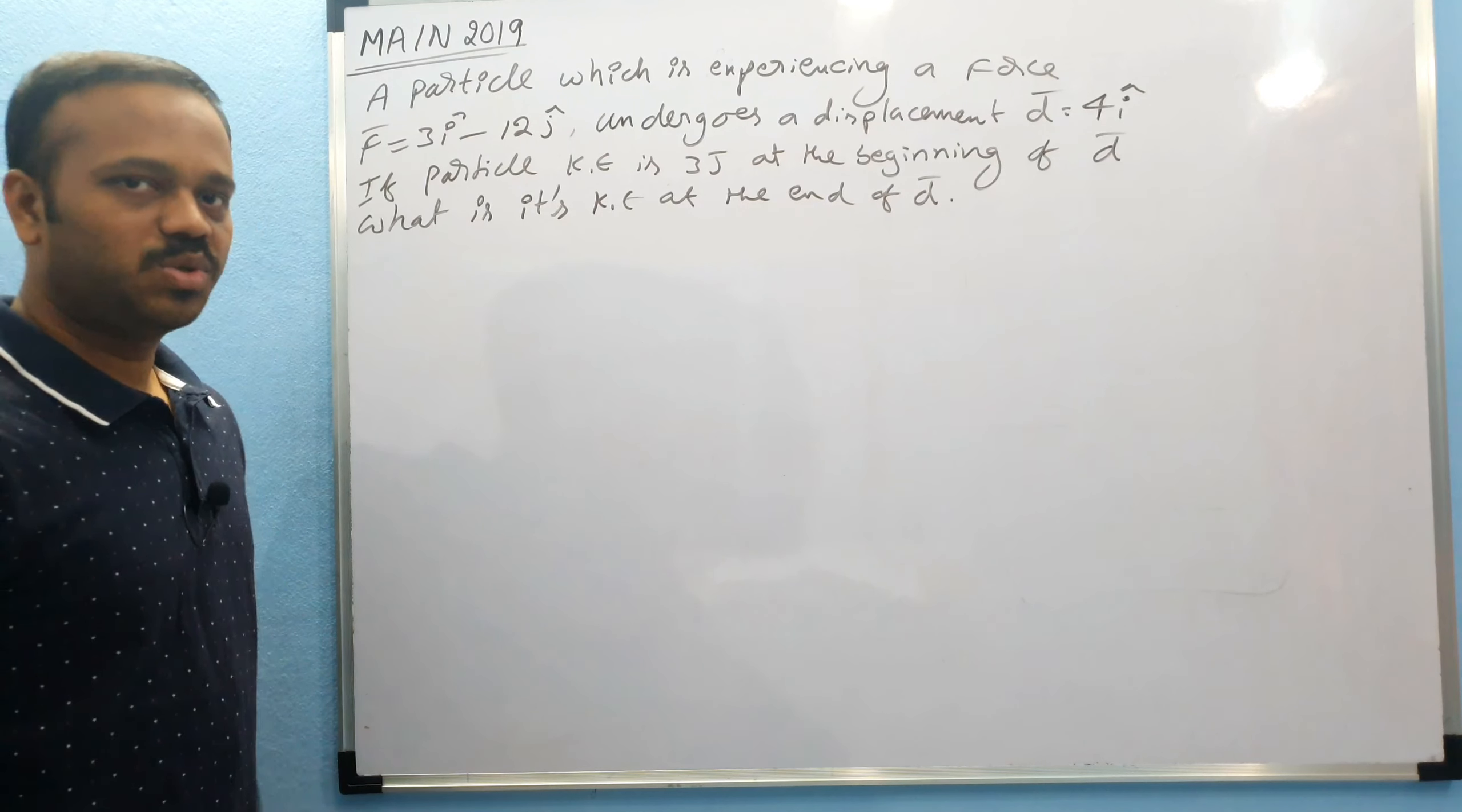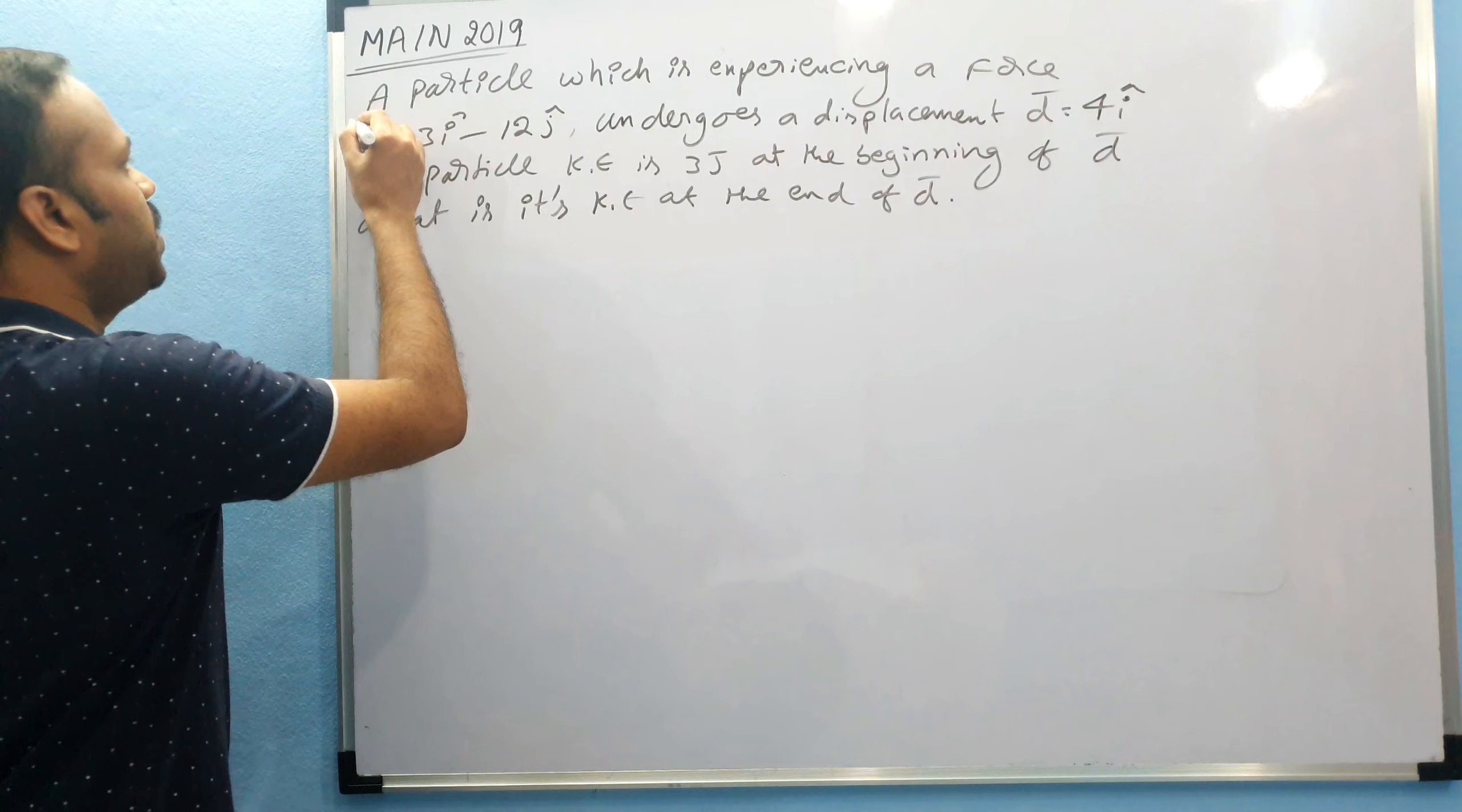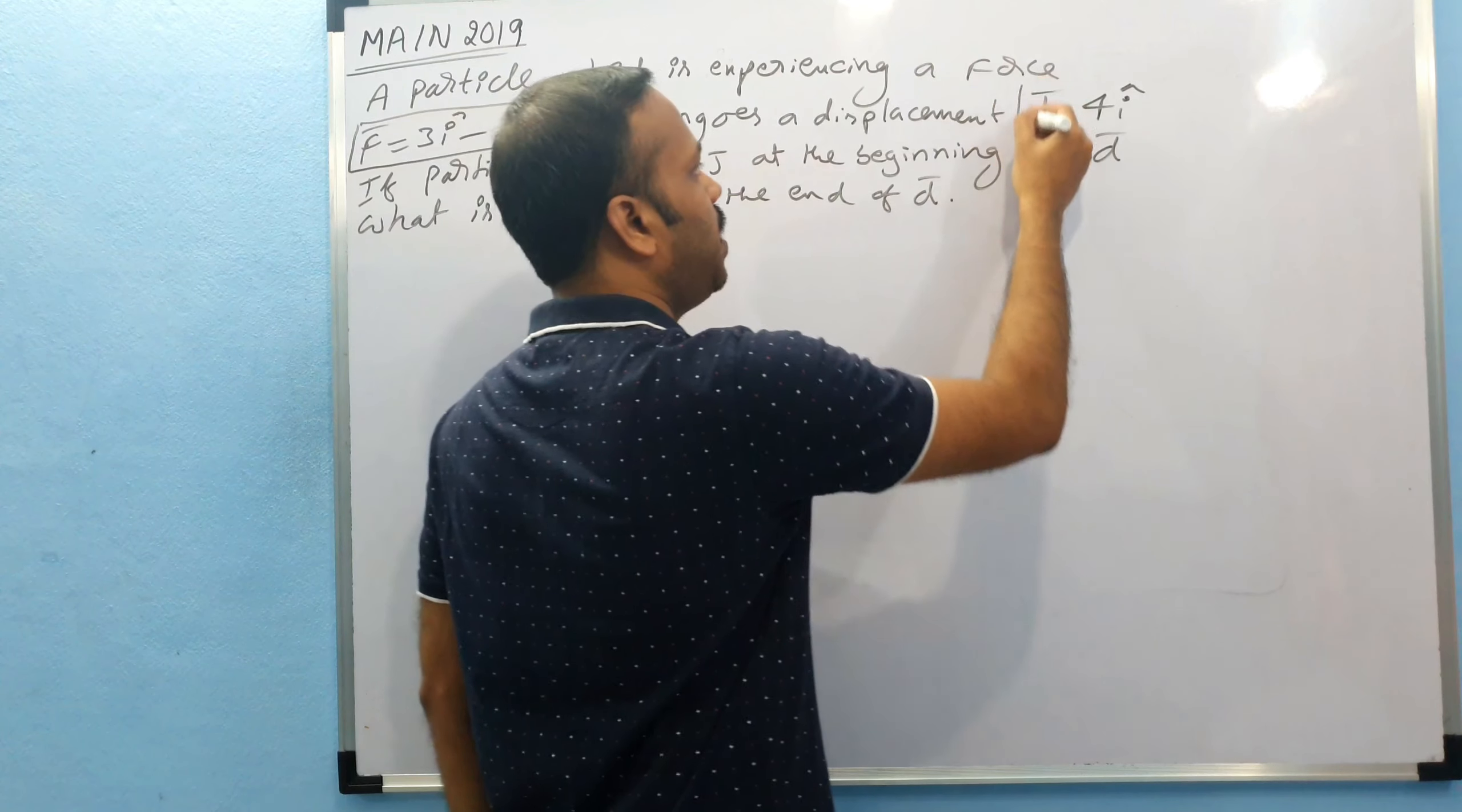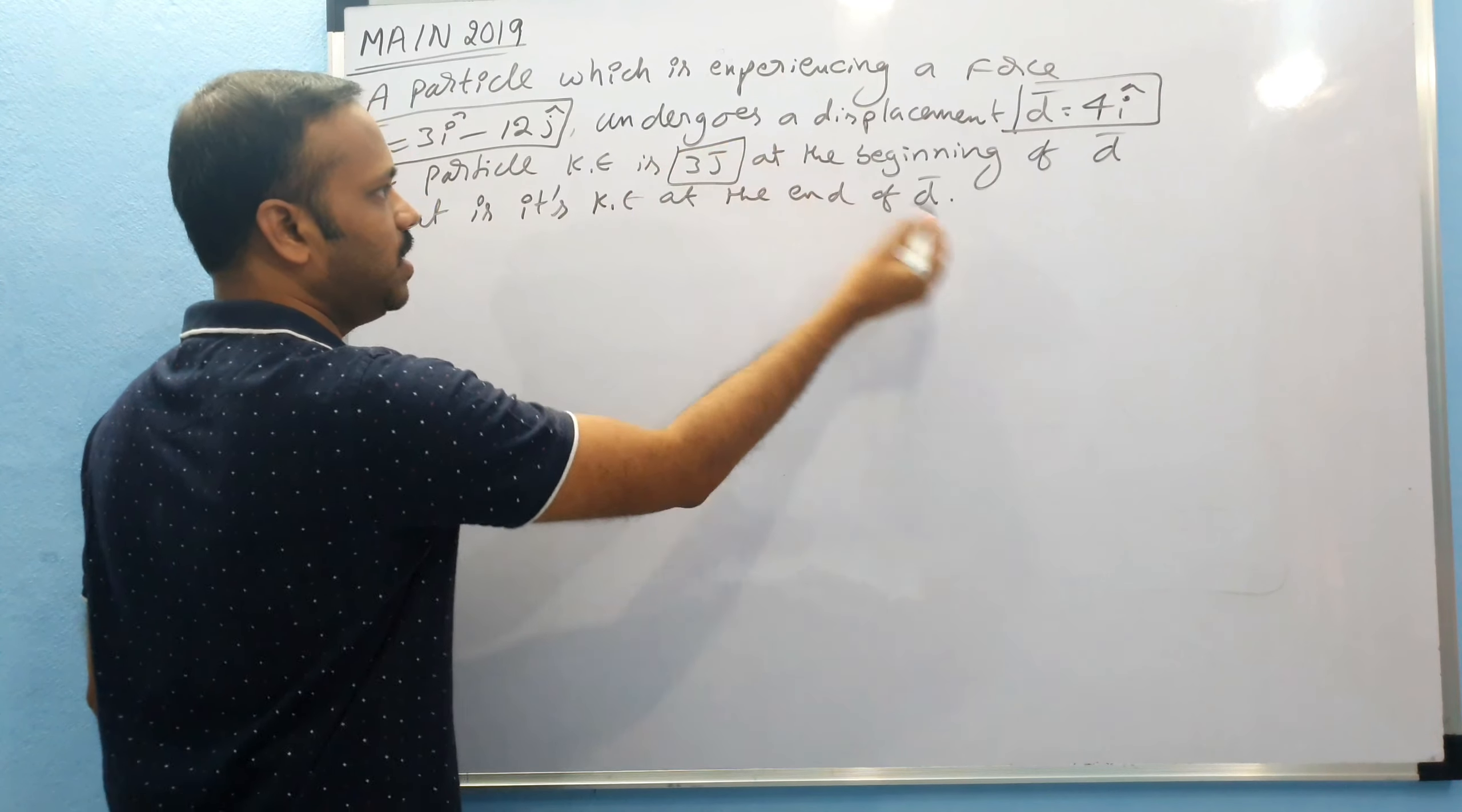This is the question given in mains 2019. A particle which is experiencing a force F = 3i - 12j undergoes a displacement d = 4i. If the particle's kinetic energy is 3 joules initially at the beginning, what is its final kinetic energy?